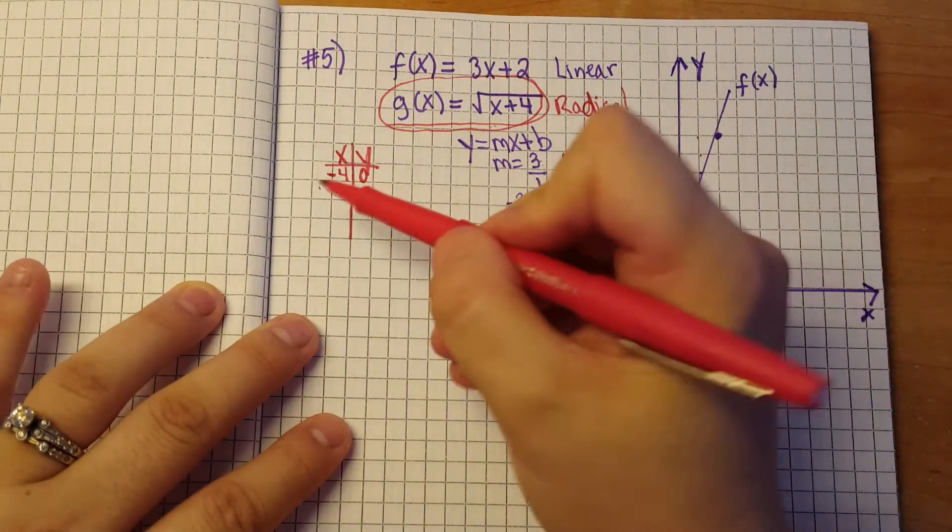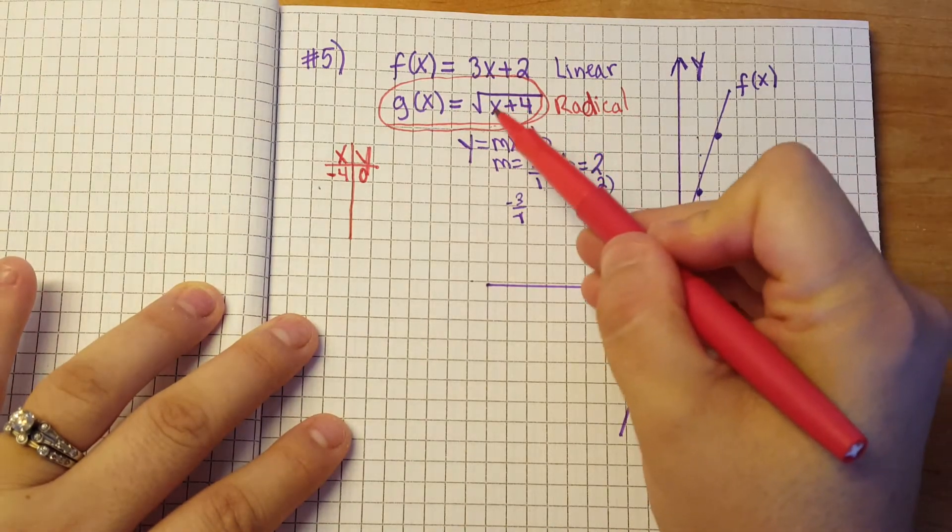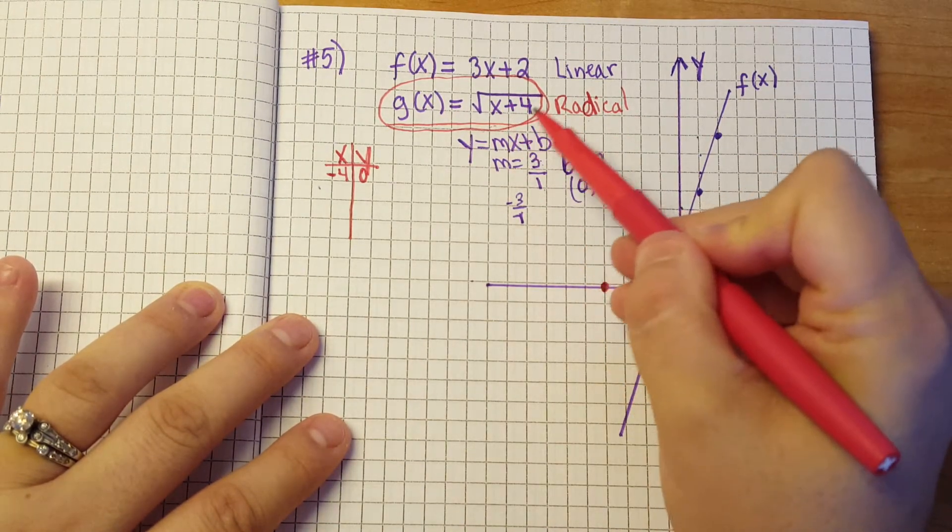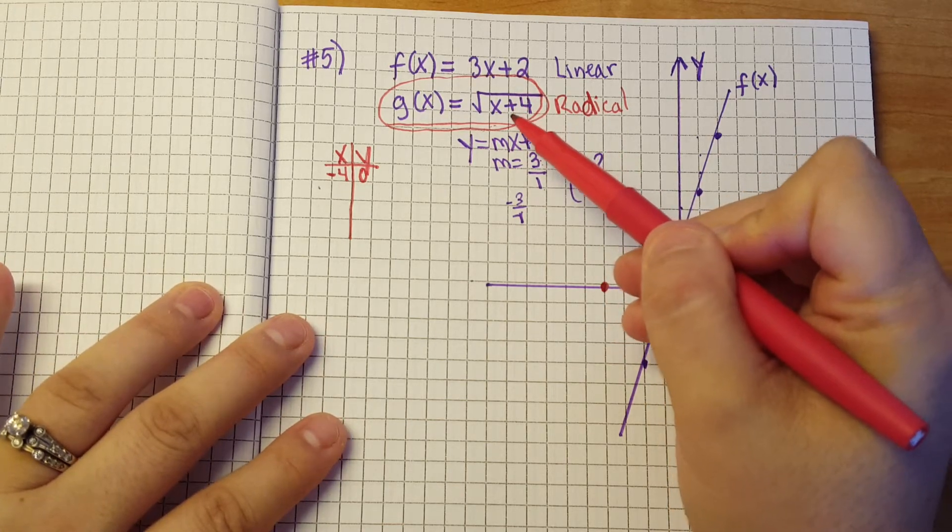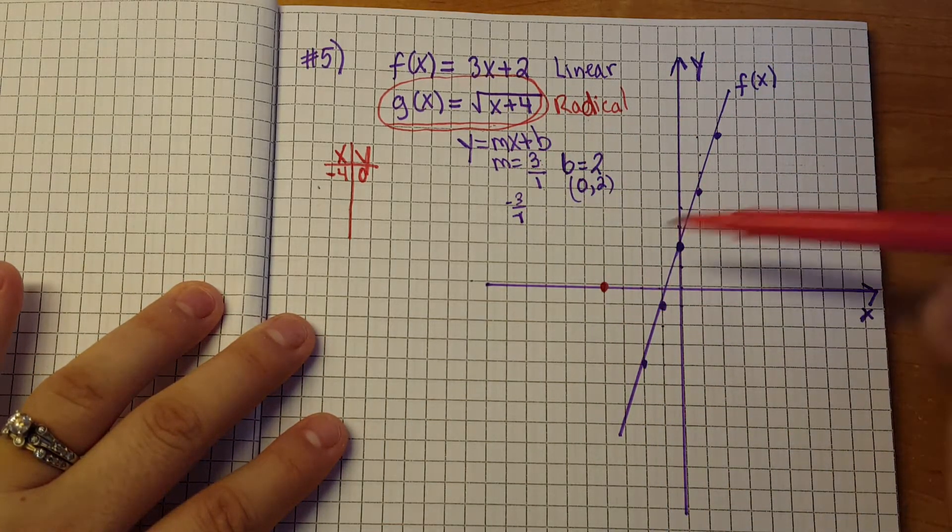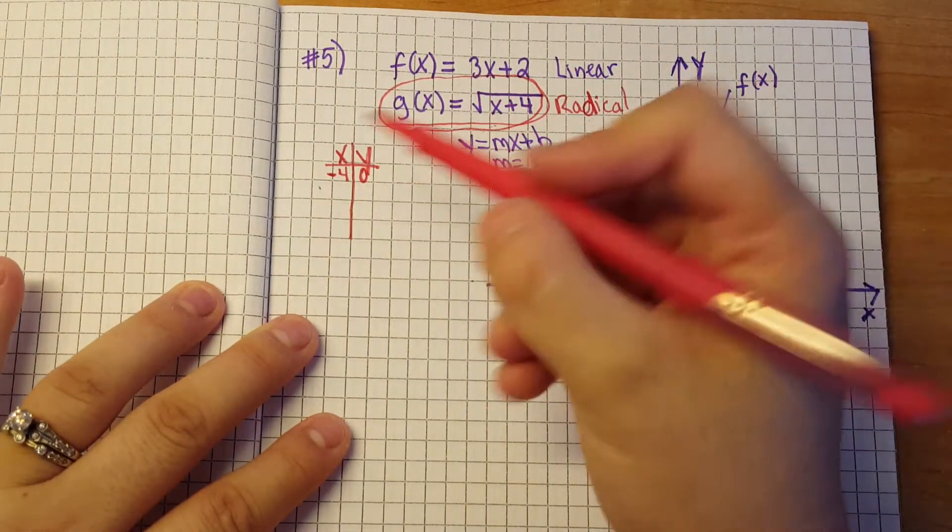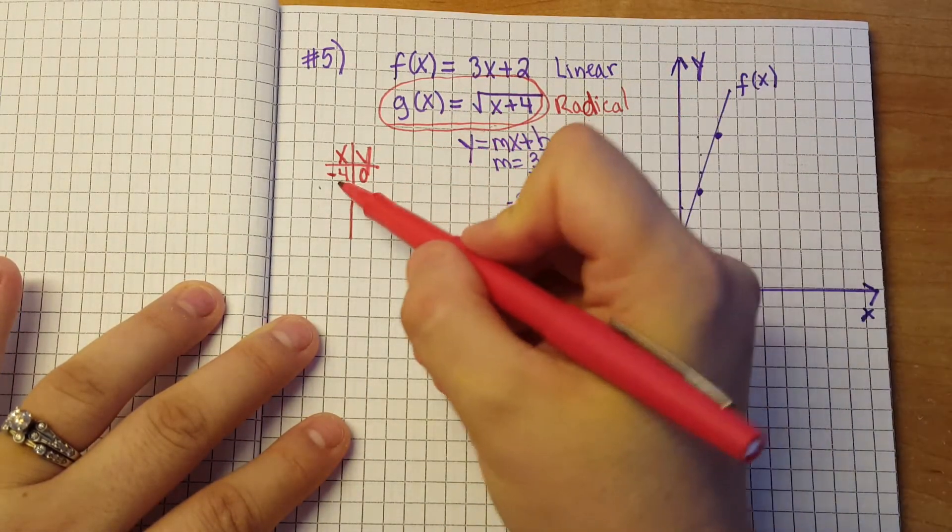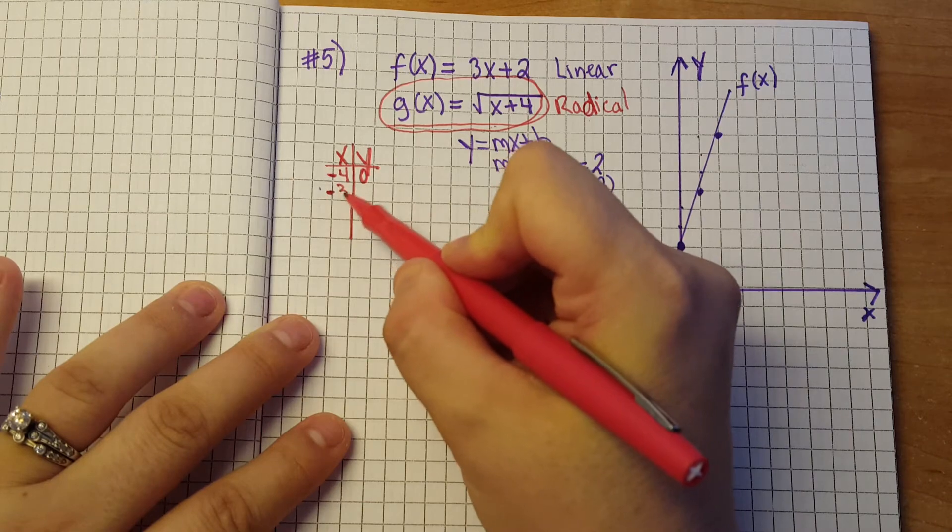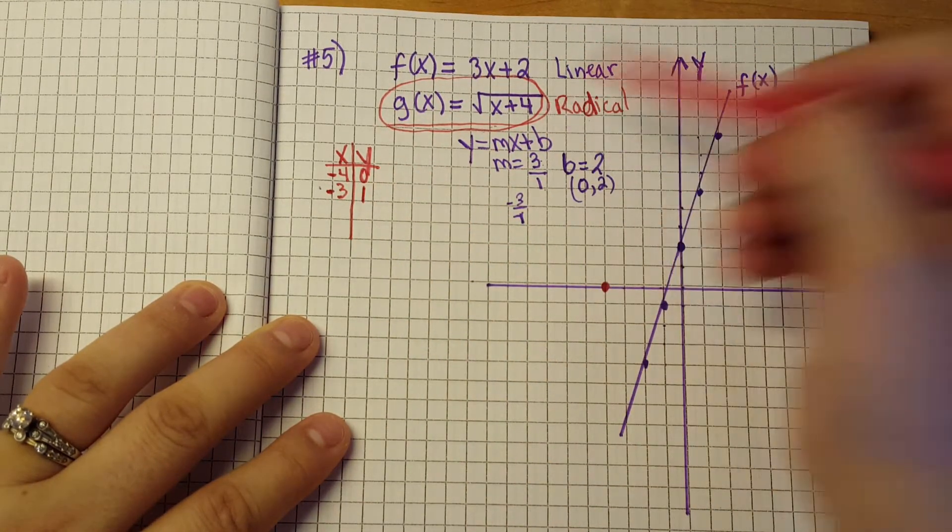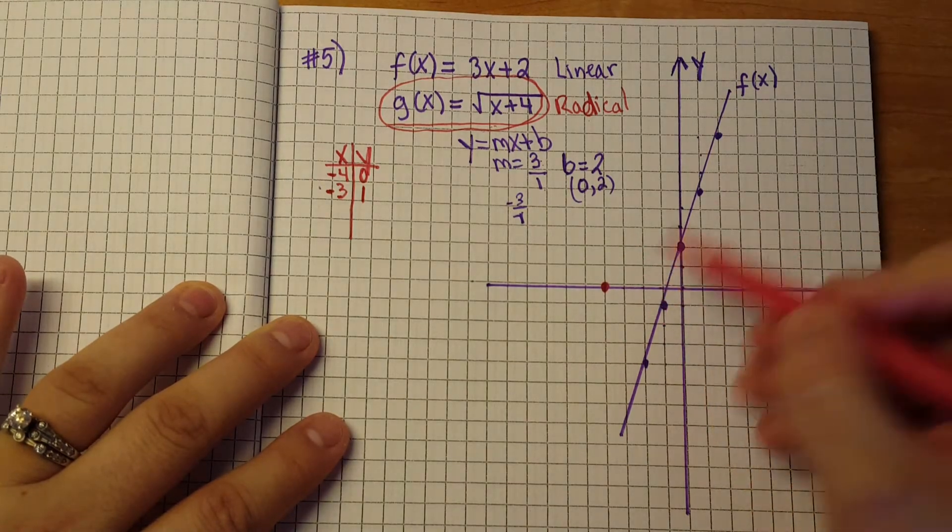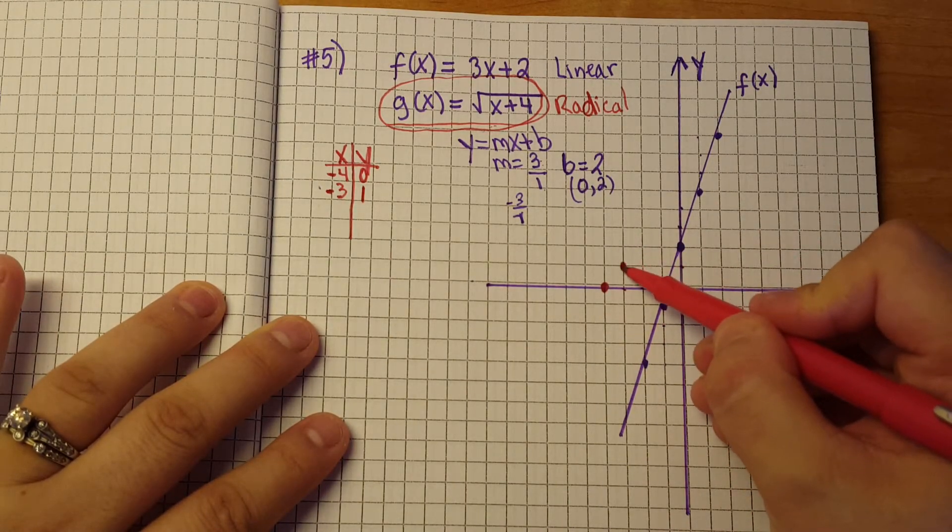To get the next point, remember because it's a radical you want to make sure that you pick numbers that give you a perfect square. So you could take the square root of perfect square numbers so that way it looks really nice when you graph it. So let's go ahead and do negative 3 here. So when we plug in negative 3 we get 1 and we know that the square root of 1 is still 1. So we're at negative 3, 1 so here's another point.